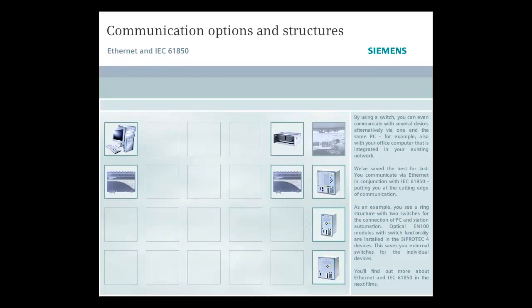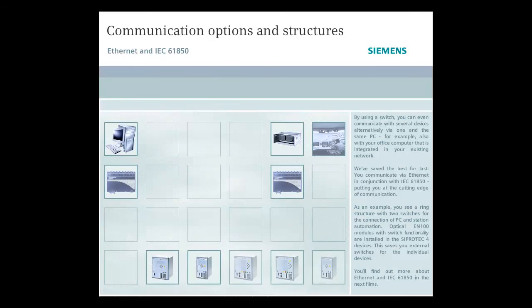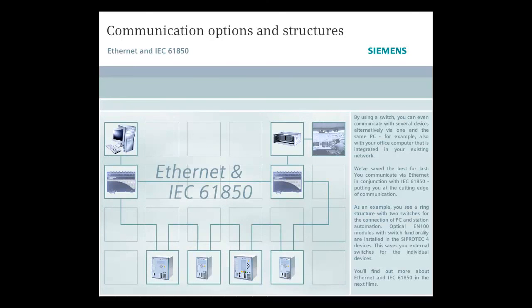We saved the best for last. You communicate via Ethernet in conjunction with IEC-61850, putting you at the cutting edge of communication. As an example, you see a ring structure with two switches for the connection of PC and station automation. Optical EN100 modules with switch functionality are installed in the C-Protect 4 devices. This saves you external switches for the individual devices. You'll find out more about Ethernet and IEC-61850 in the next films.